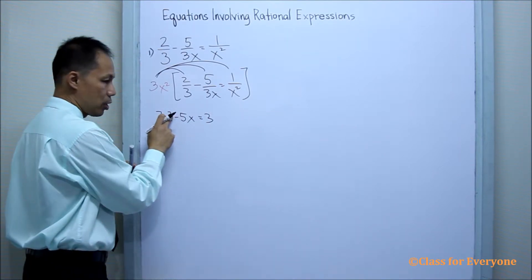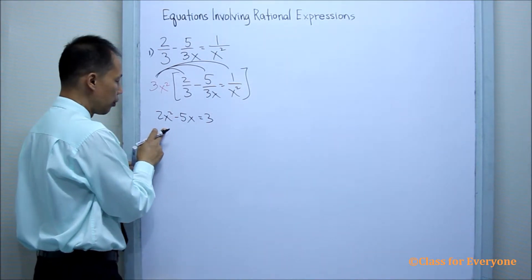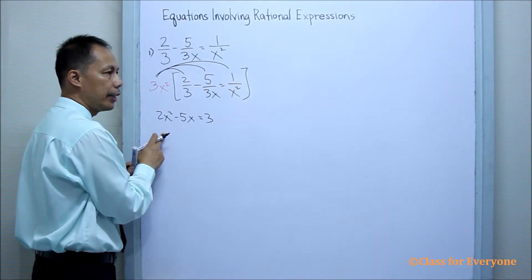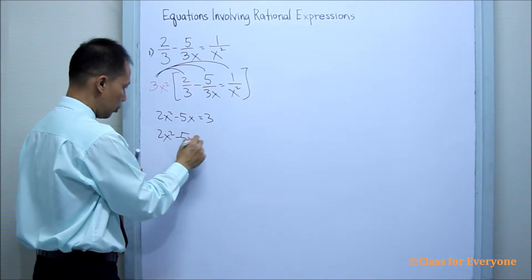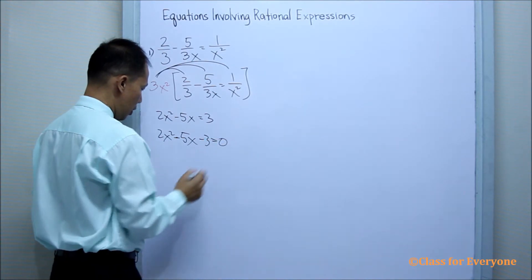Now, we have a square, so we are dealing with a quadratic equation. So to solve for a quadratic equation, we will write it into standard form. Minus 3 equals 0.